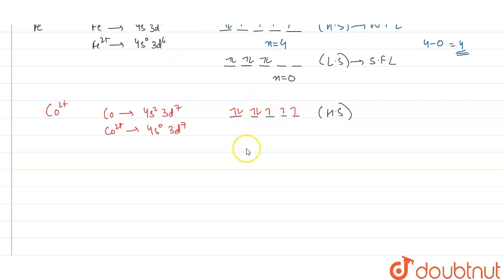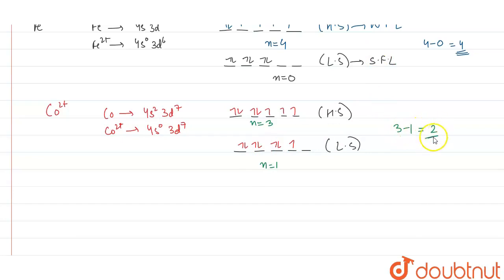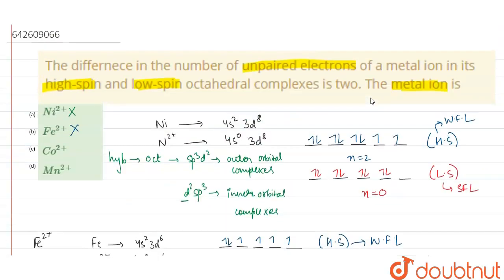Now for the low spin complex: in the high spin complex, the number of unpaired electrons is 3, and in the low spin complex n equals 1 — we have 1 unpaired electron. The difference is 3 minus 1, which equals 2. The difference is 2 for this ion, so the correct option is option C, cobalt 2 plus.